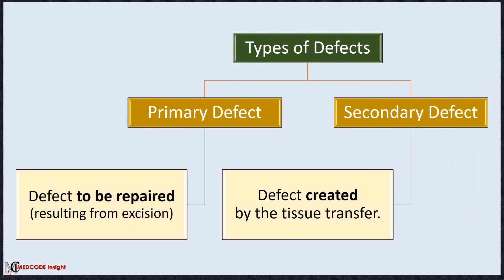Adjacent tissue transfer involves both the primary and secondary defect, both of which are repaired in the procedure. The primary defect is created by the excision of a benign or malignant region. The creation of this primary defect is included in the adjacent tissue transfer and is not coded separately. The secondary defect is created by the movement of tissue necessary to close the primary defect.